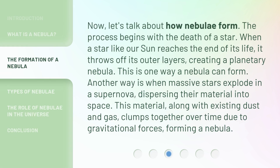Now, let's talk about how nebulae form. The process begins with the death of a star. When a star like our sun reaches the end of its life, it throws off its outer layers, creating a planetary nebula. This is one way a nebula can form. Another way is when massive stars explode in a supernova, dispersing their material into space. This material, along with existing dust and gas, clumps together over time due to gravitational forces, forming a nebula.